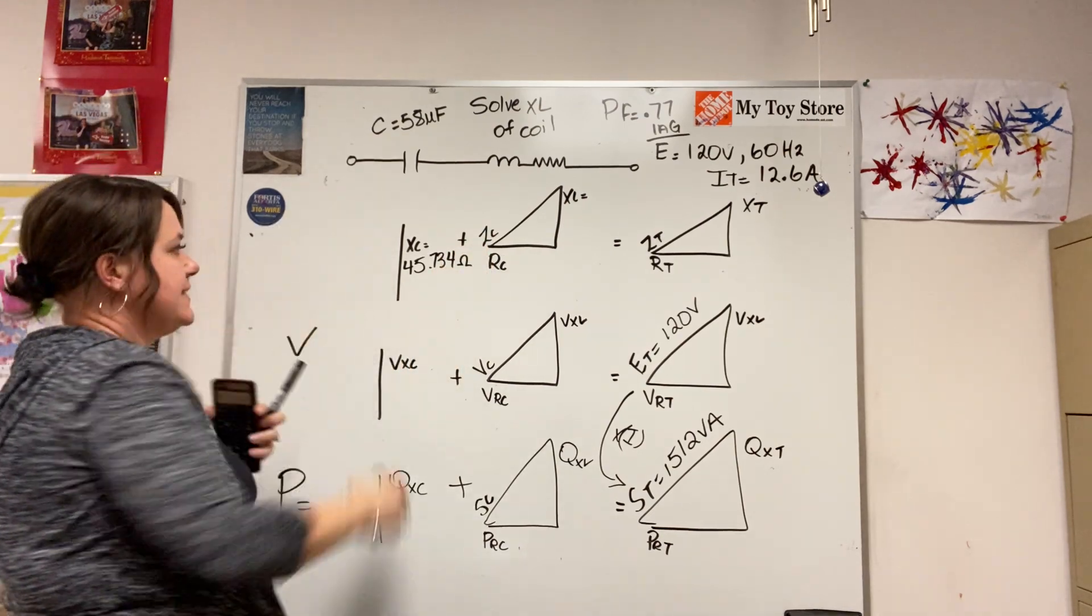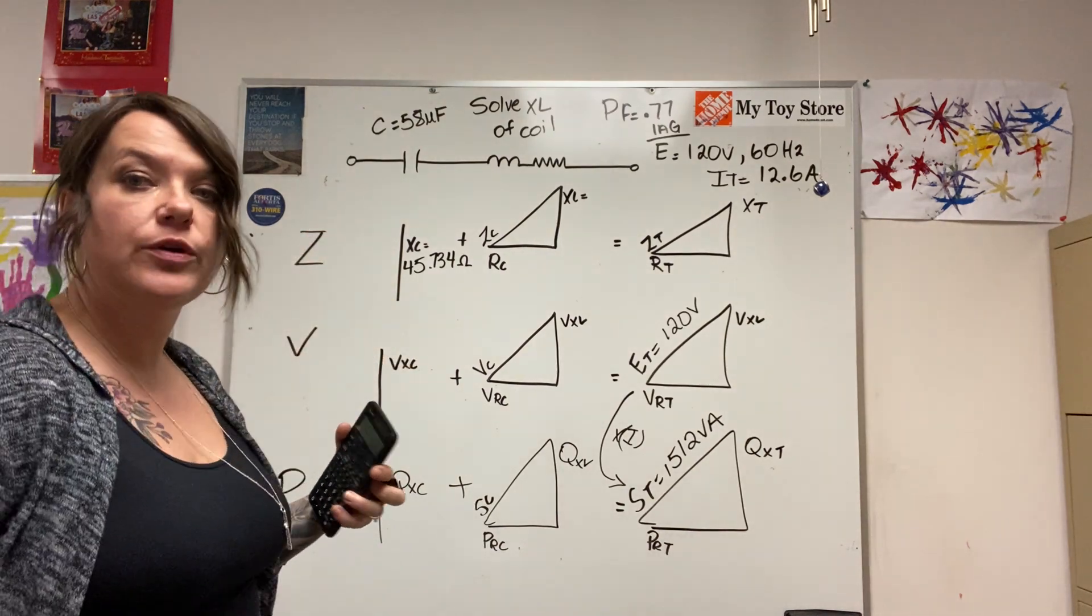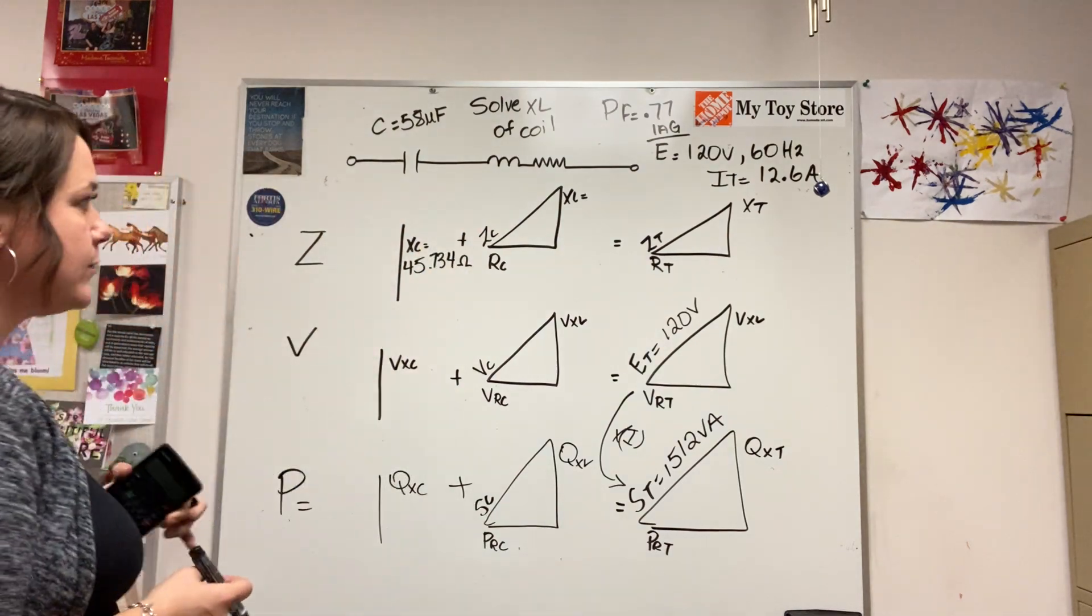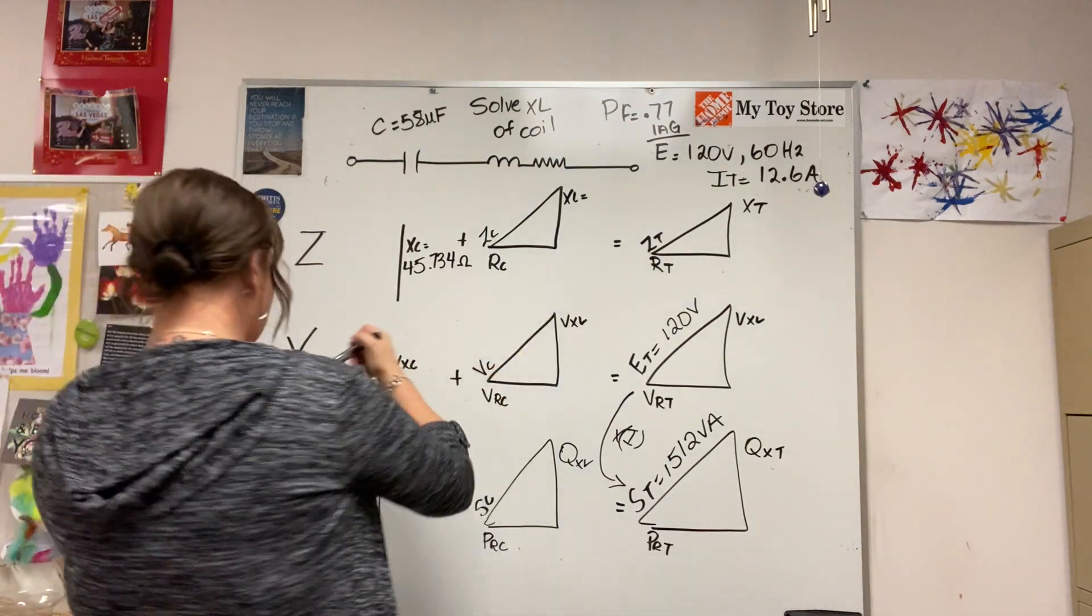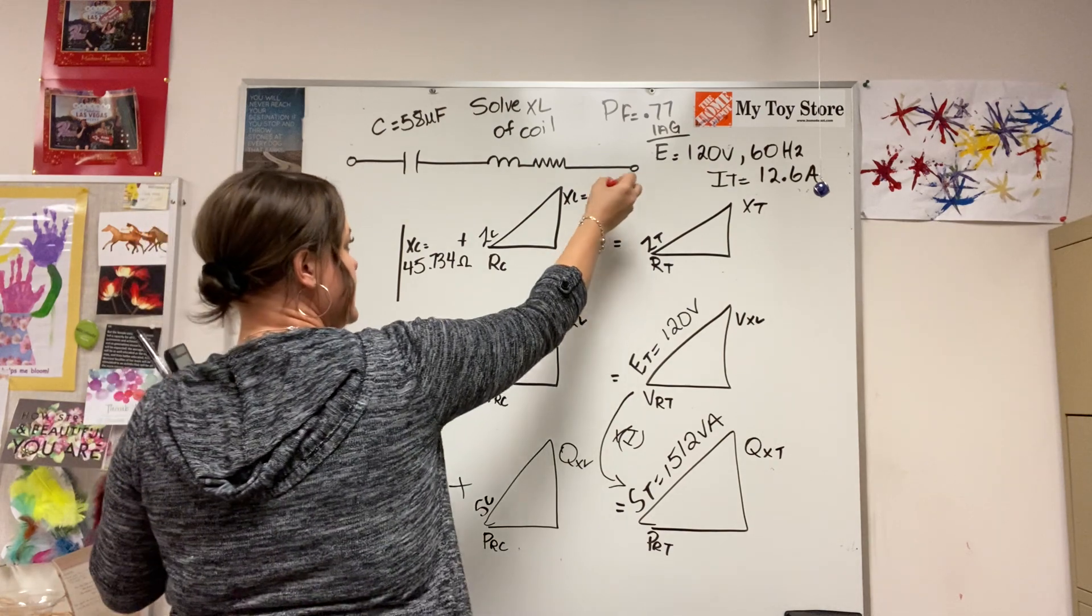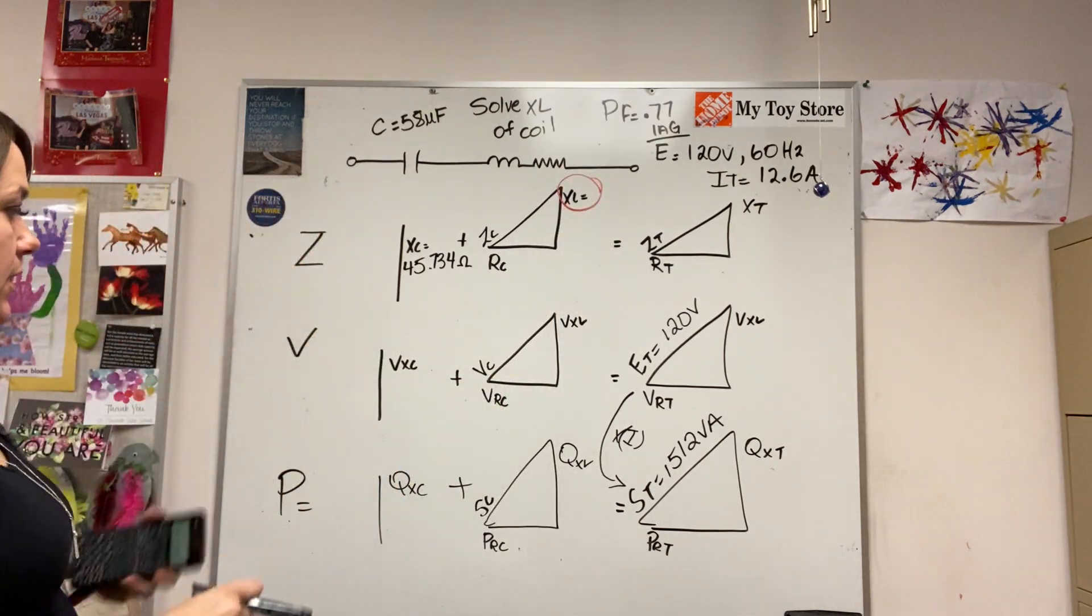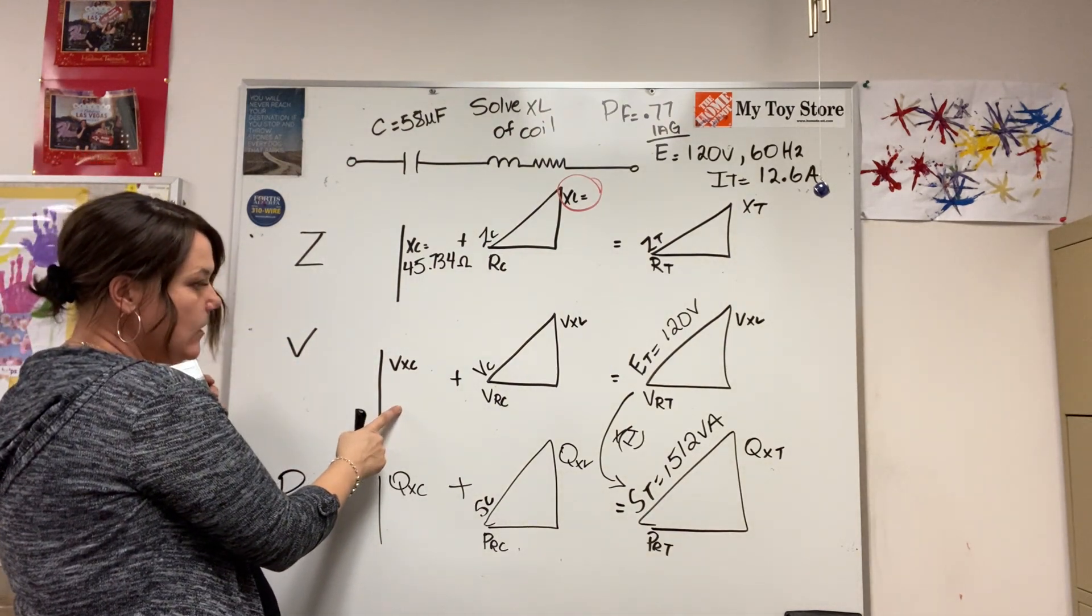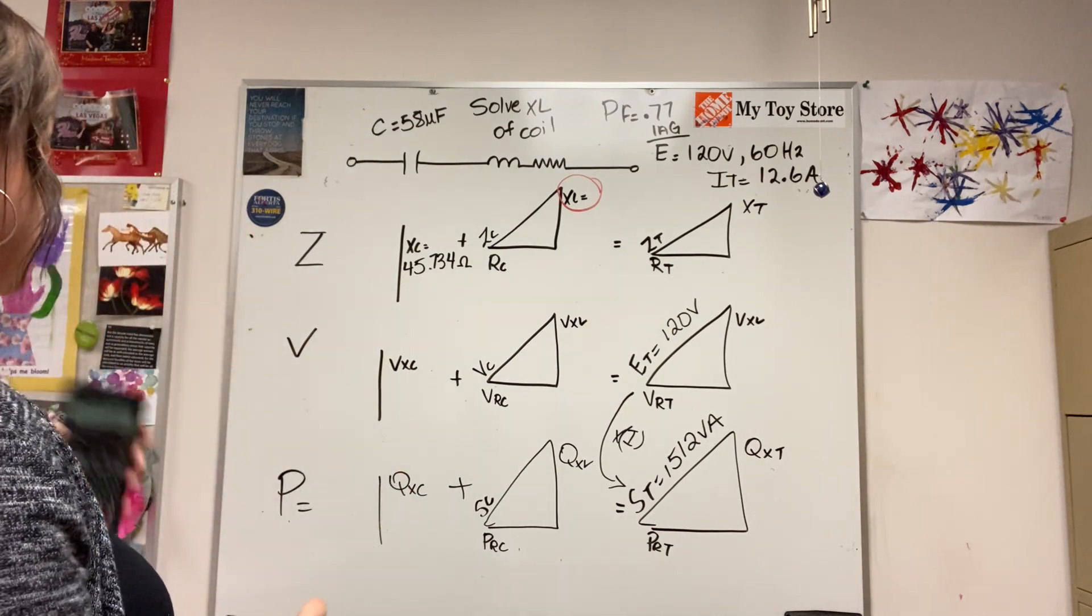So get rid of this, put Z back up there. By this point you certainly should be comfortable with using your capacitive reactance formula as well as your inductive reactance formula. What else do I have? Well, I have current, and ultimately what am I looking to find? I'm looking to find the XL of this. So I can start looking at moving down. I can figure out my VXC. Let's do that.